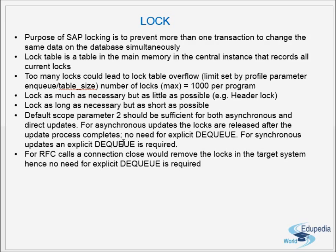For asynchronous updates, no explicit dequeue is needed — locks are released automatically after the update process completes. For synchronous updates, an explicit dequeue is required. In synchronous mode, the dialog work process waits until the update work process completes its task and returns information back. In asynchronous mode, the dialog work process simply hands over the update task and carries on.